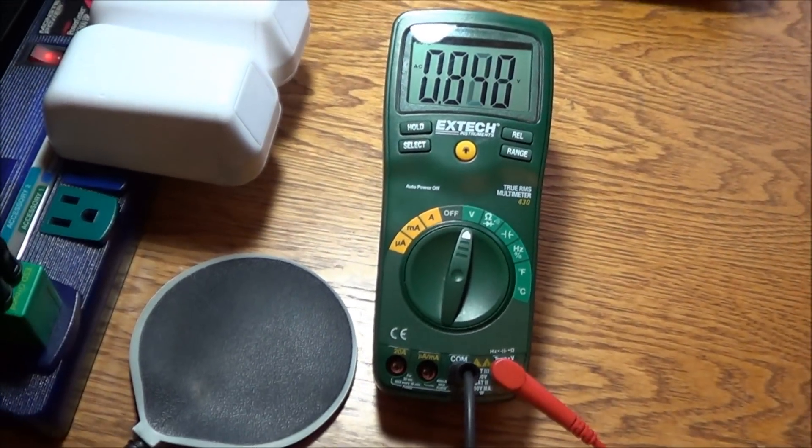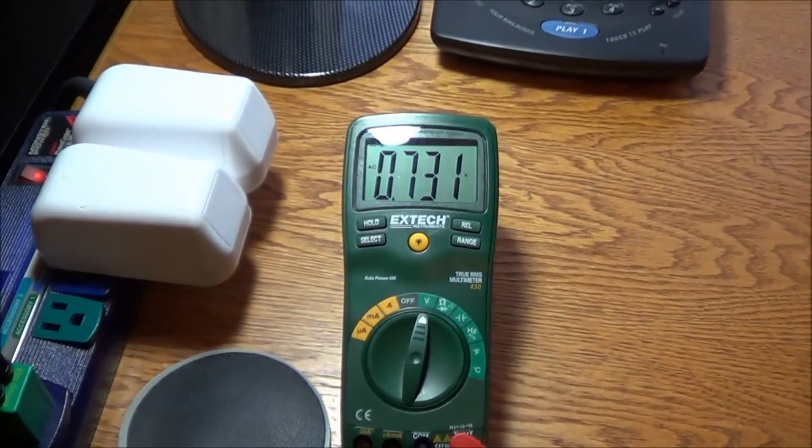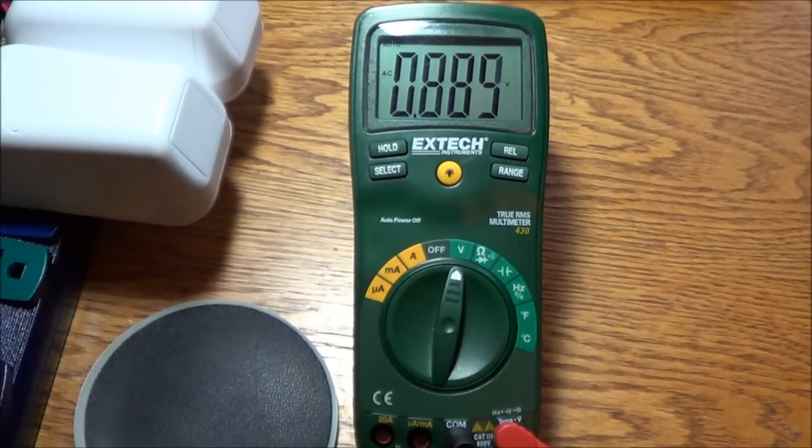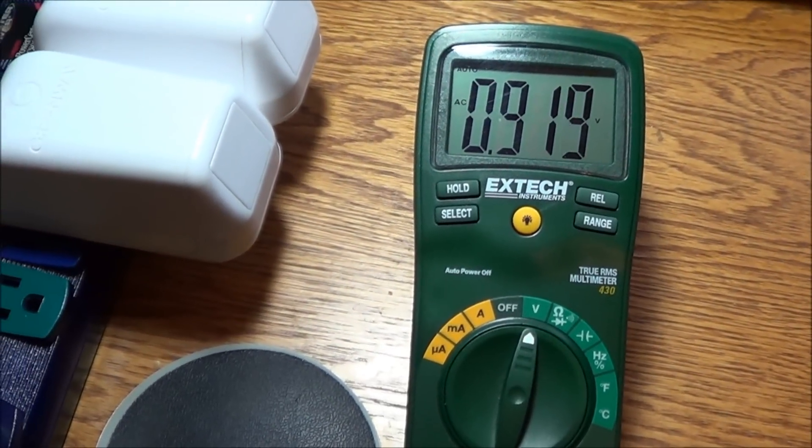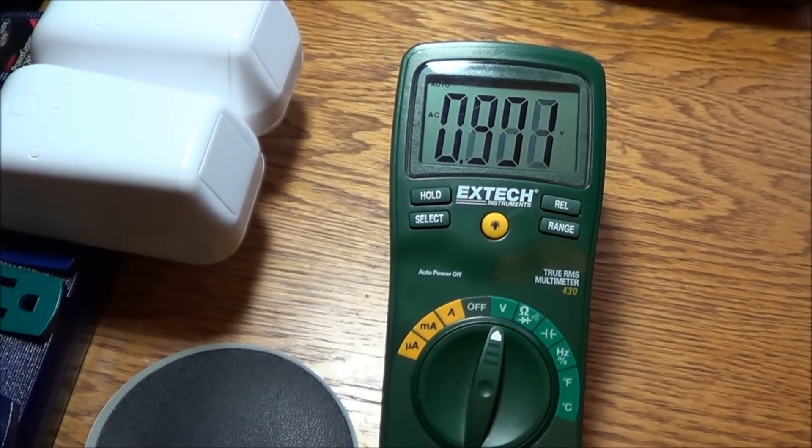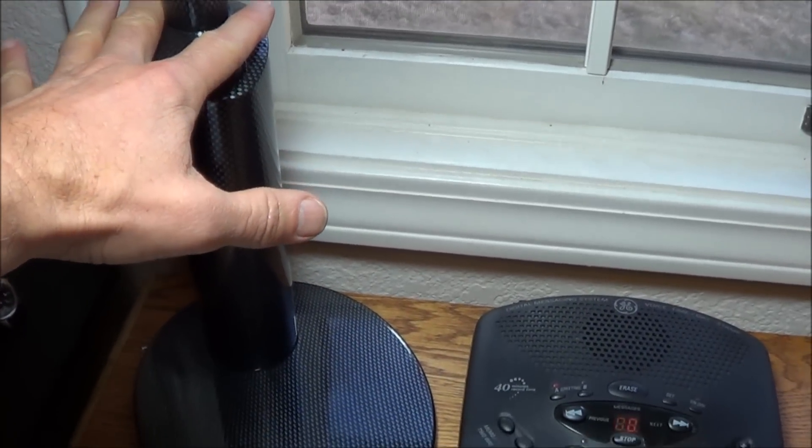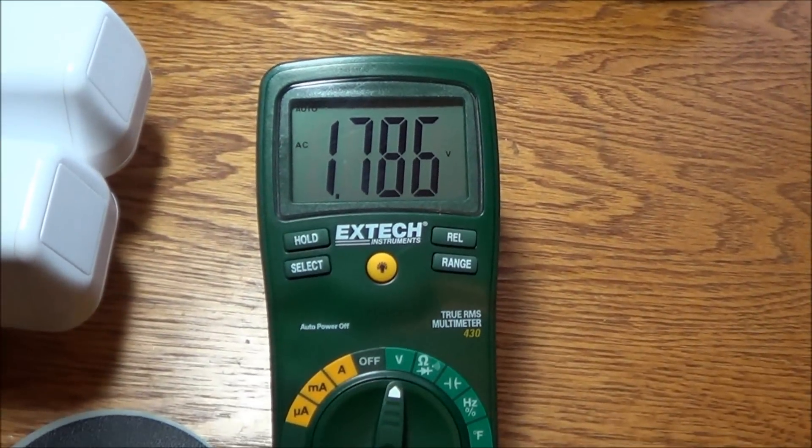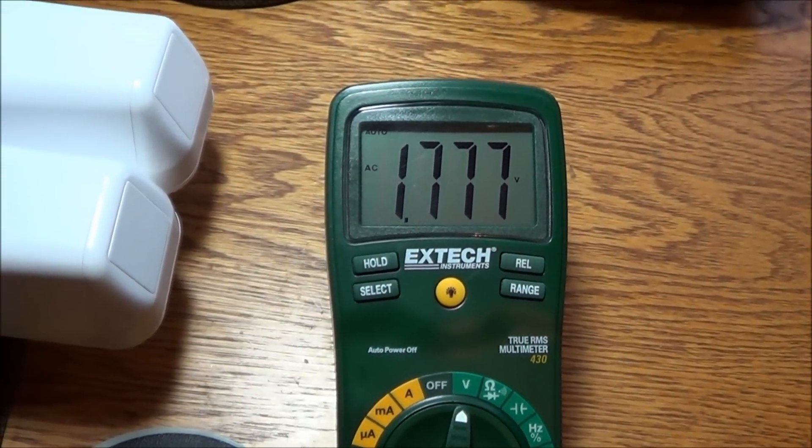So it's very important to be grounded while you're working at your workstation. Now, right here, you can see my body just in the ambient electrical fields is at about 900 millivolts. And I reach over here near the electrical field of the desk lamp, and I'm at one and three quarters volts, which is quite substantial.